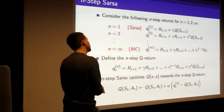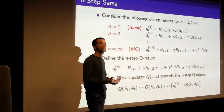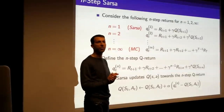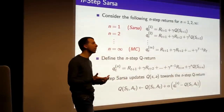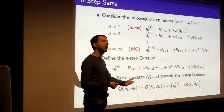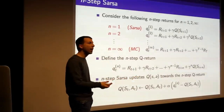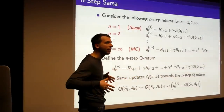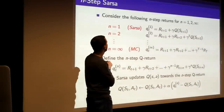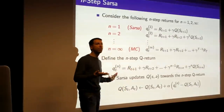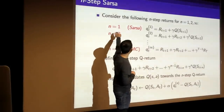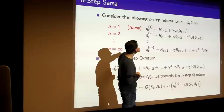Now we're going to take the same step as last class: consider the spectrum between Monte Carlo and TD learning using eligibility traces and lambda variants of these algorithms. The goal is to get the best of both worlds — the unbiased behavior from Monte Carlo and control over the bias-variance tradeoff — by considering n-step returns.